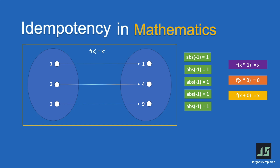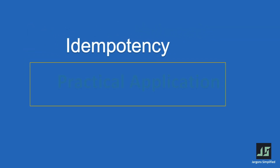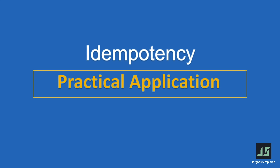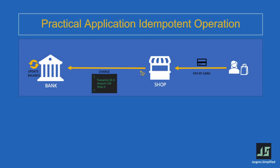Idempotency finds practical application in various real-world scenarios. For instance, in financial transactions, an idempotent operation ensures that the same transaction request can be safely retried. So even if the shop requests the bank to charge a card multiple times due to some issue, the customer needs to be charged only once and the bank should update the balance only once. This operation of charging the customer and updating the balance needs to be idempotent.